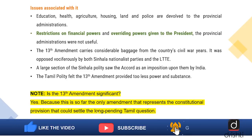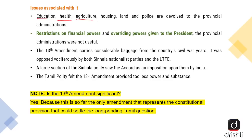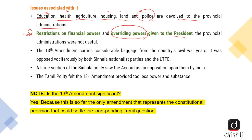Under the provincial system, education, health, agriculture, housing, land and police were all supposed to be devolved to the provincial administrations. However, to run these functions, they also needed to be given financial powers. Restrictions were placed on financial powers, and overriding powers were given to the president, meaning that the provincial administrations did not serve any real purpose.